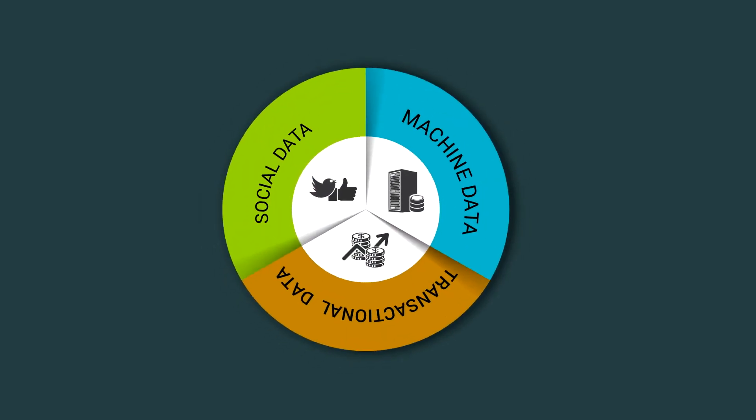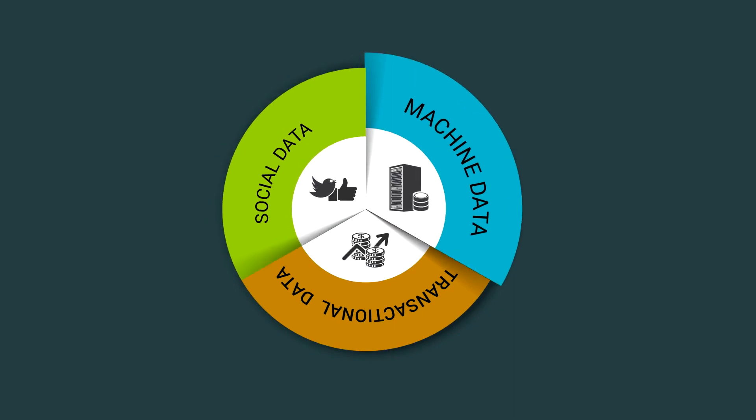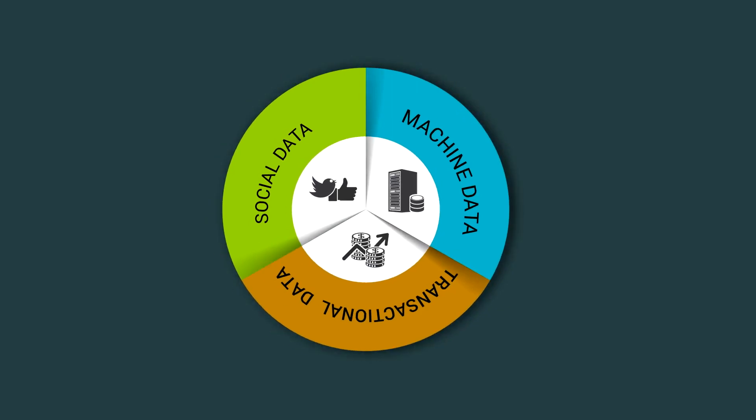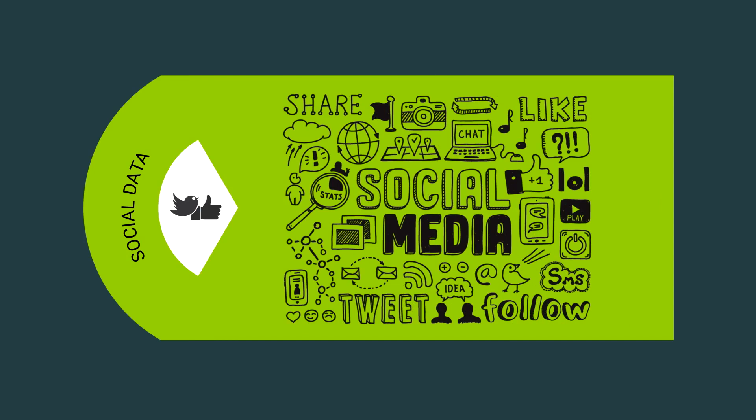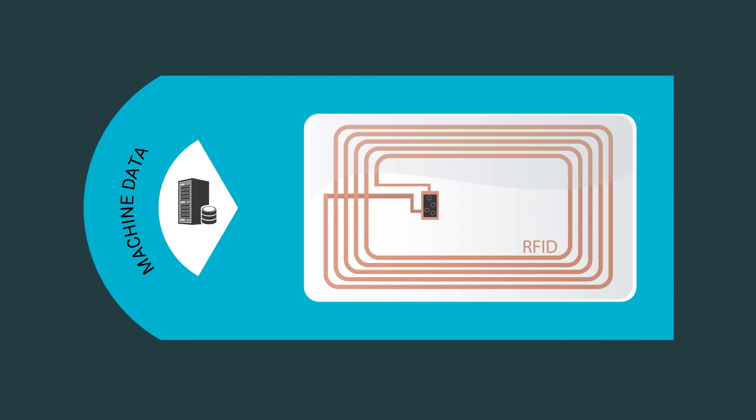Let's now look at the three sources of Big Data: Social Data, Machine Data, and Transactional Data. Social Data is obtained from social media sites such as Facebook and Twitter. Machine Data is the information generated from Radio Frequency Identification, or RFID, tags. Location Data, such as RFID chip readings and GPS output, are examples of such data.